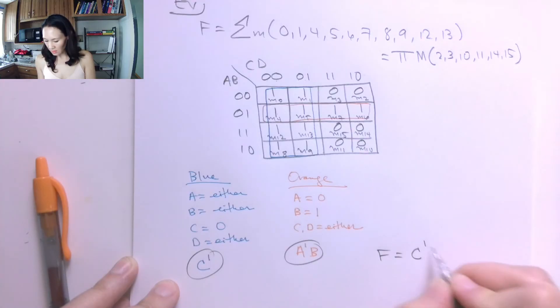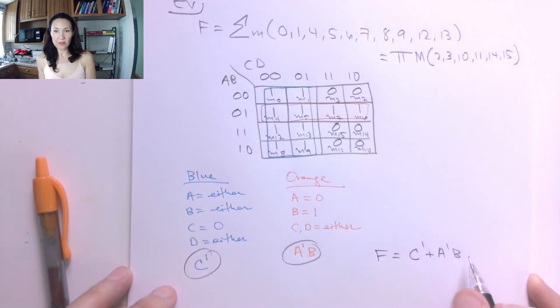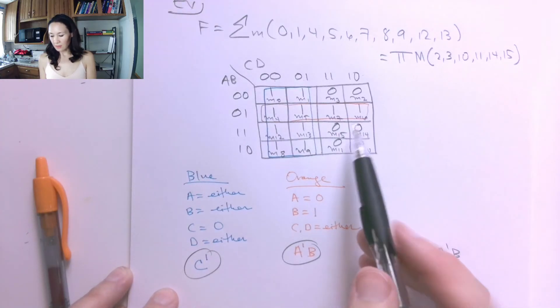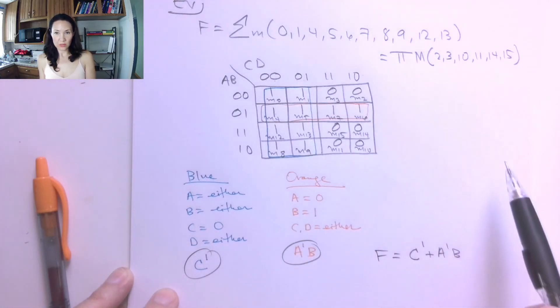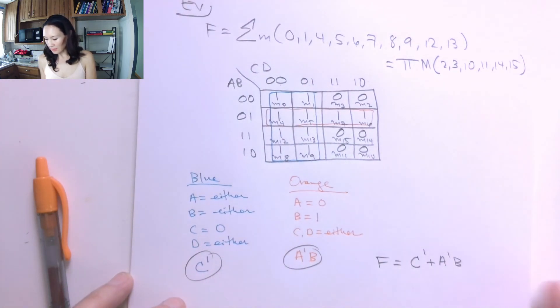So this is C naught or A naught B. And this is my simplified function that I got from the Karnaugh map rather than using Boolean algebra to simplify it down.